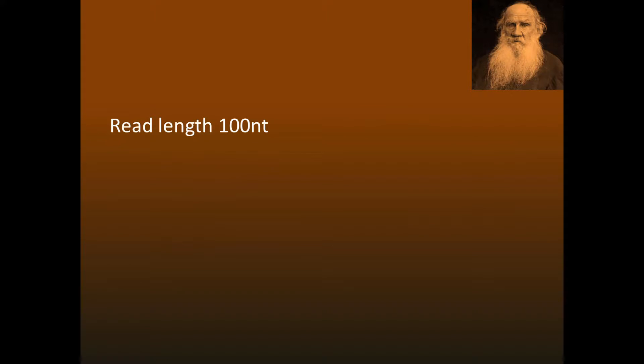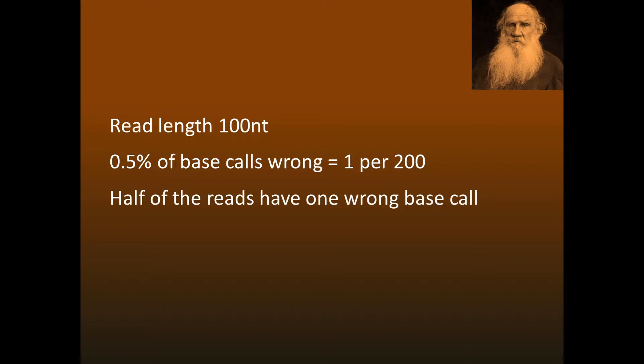Choosing some round numbers, suppose the read length is 100 nucleotides and 0.5% of the base calls are wrong, then there's one wrong letter out of every 200, and half the reads have bad sequences. Notice that the error rate per read is 100 times greater than the error rate per base.